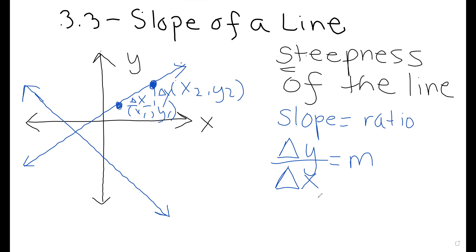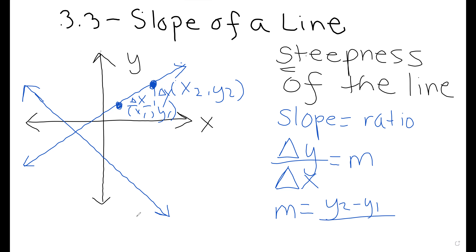The change in y divided by the change in x gives us the slope. You can find that change by subtracting: y₂ minus y₁ over x₂ minus x₁. This is the slope formula — m equals (y₂ − y₁) / (x₂ − x₁). This is a formula you should know — write it down and put it in your notes.